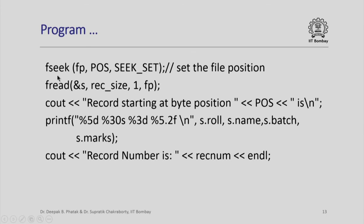Now, I use the fseek statement to set the internal file position pointer: fseek(fp, pos, SEEK_SET). This will set the internal pointer to the beginning of the sixth record, and when I issue a fread command, it will read actually the sixth record. One record of rec_size will be read into the structure variable s. I print out just for verification the roll number, name, batch, and marks. This will verify whether I have correctly read the stipulated record or not.